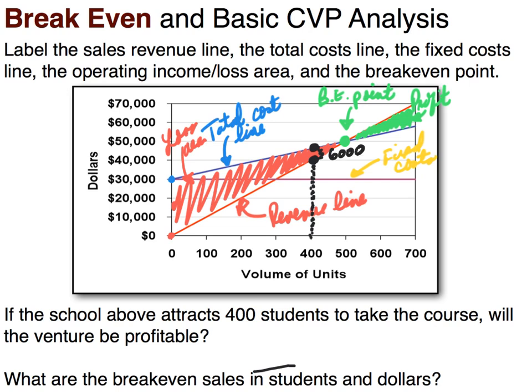So that area would be a loss of about $6,000 — we would not be profitable. Then it asks: what are the break-even sales in students and in dollars? We can see the break-even point: in students it's 500, and in dollars it would be $50,000.